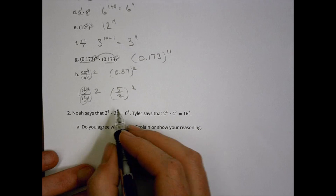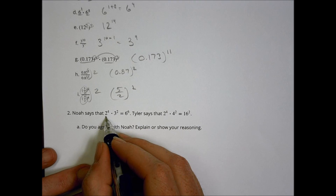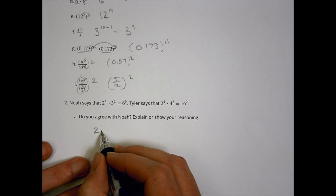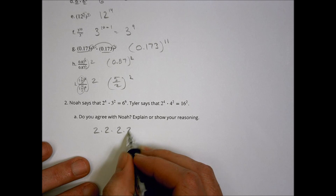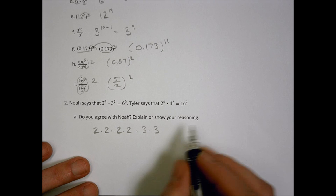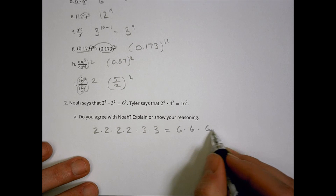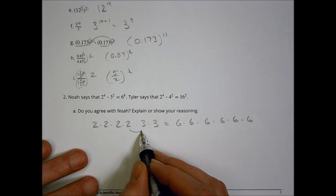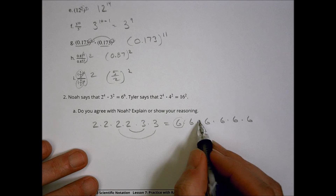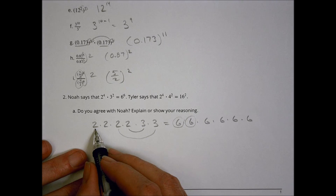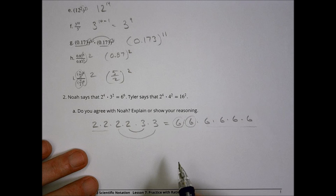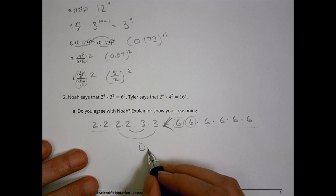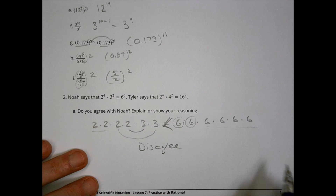The last one: Noah says that two to the fourth times three to the second equals six to the sixth. Let's see if we agree or disagree. Two times two times two times two times three times three versus six to the sixth — that's six sixes. We can match a two and three to make one six, and another two and three to make another six. But I'm left with two twos and I'm left with four sixes to go — so this is far greater; they're not equal. We disagree with Noah.